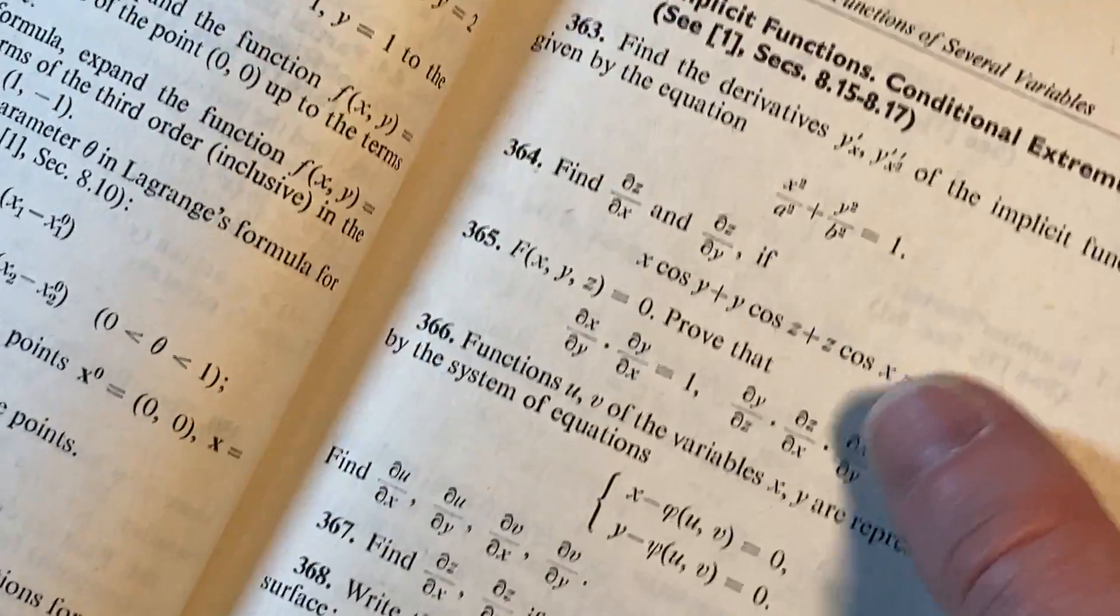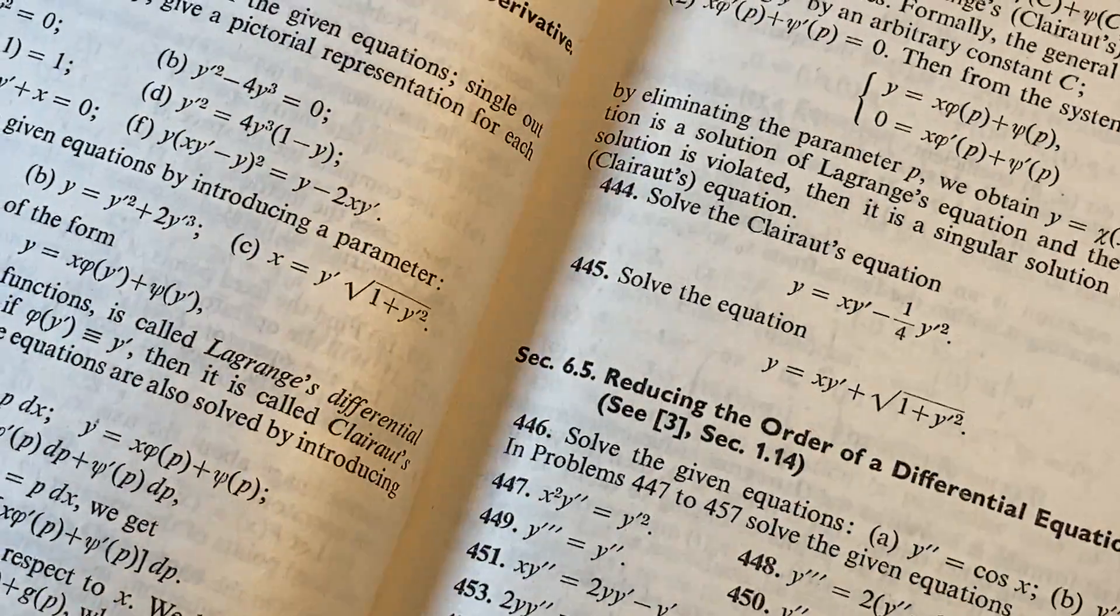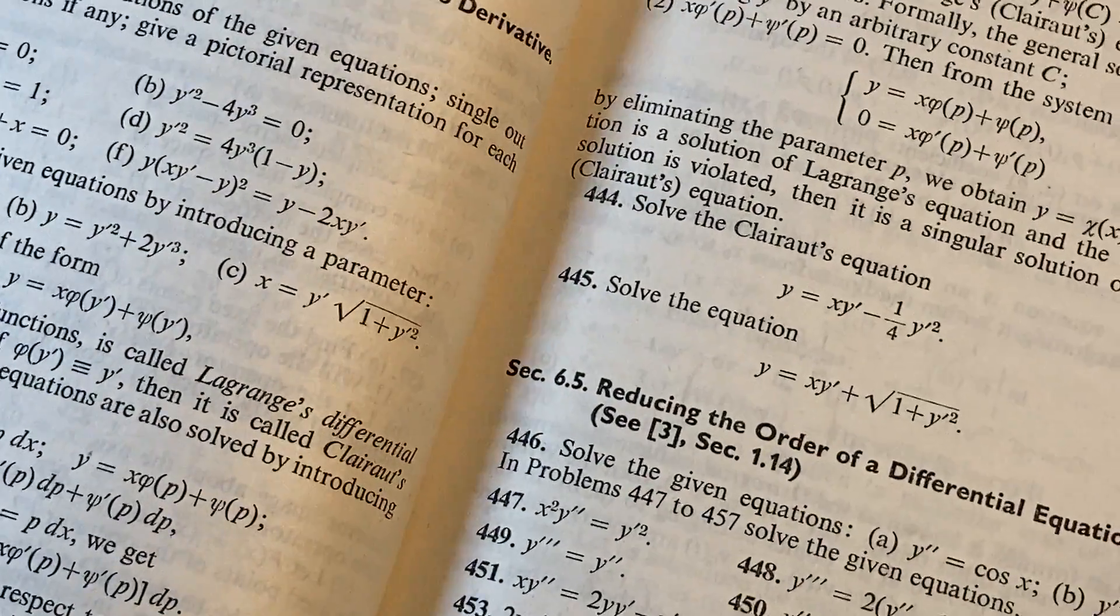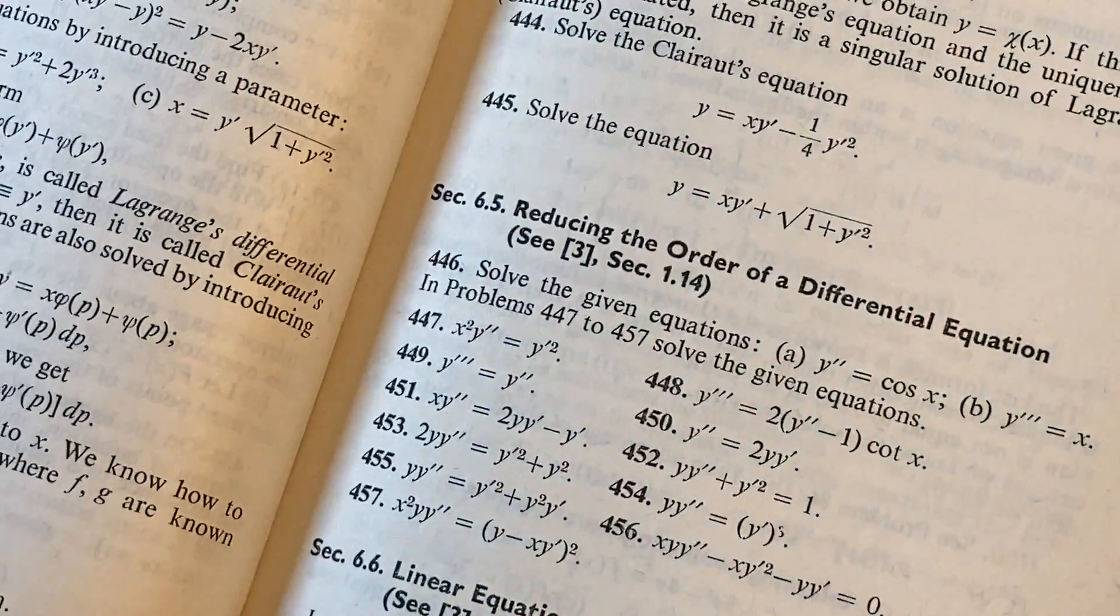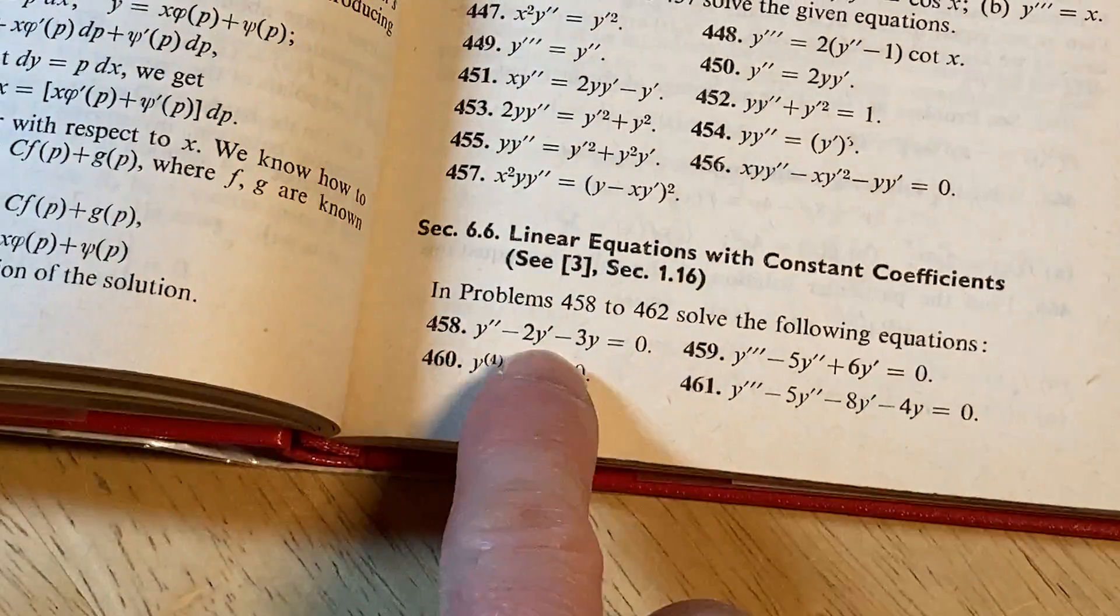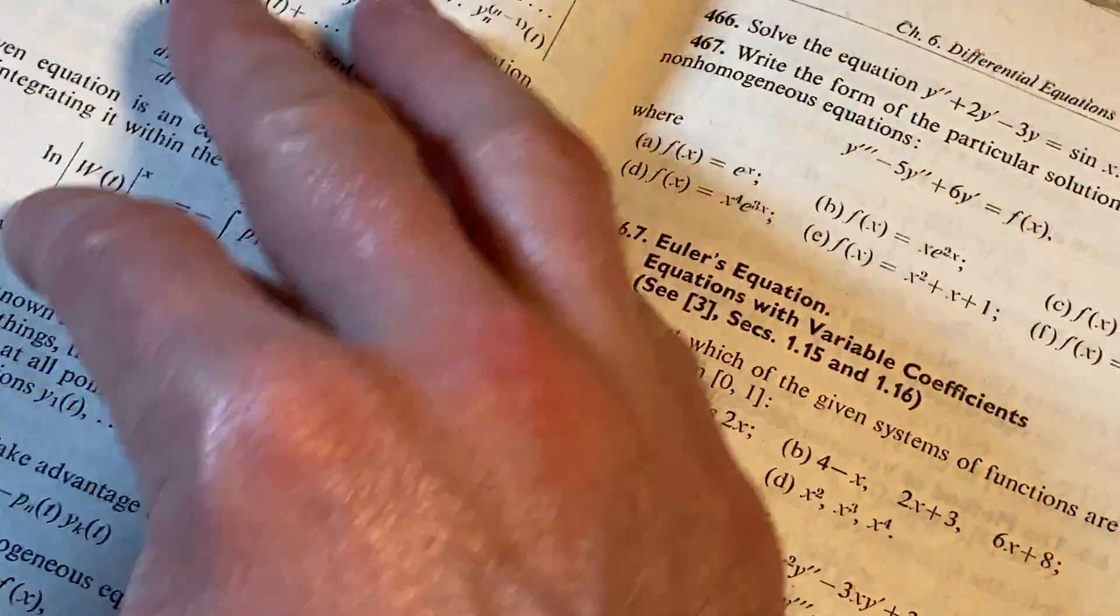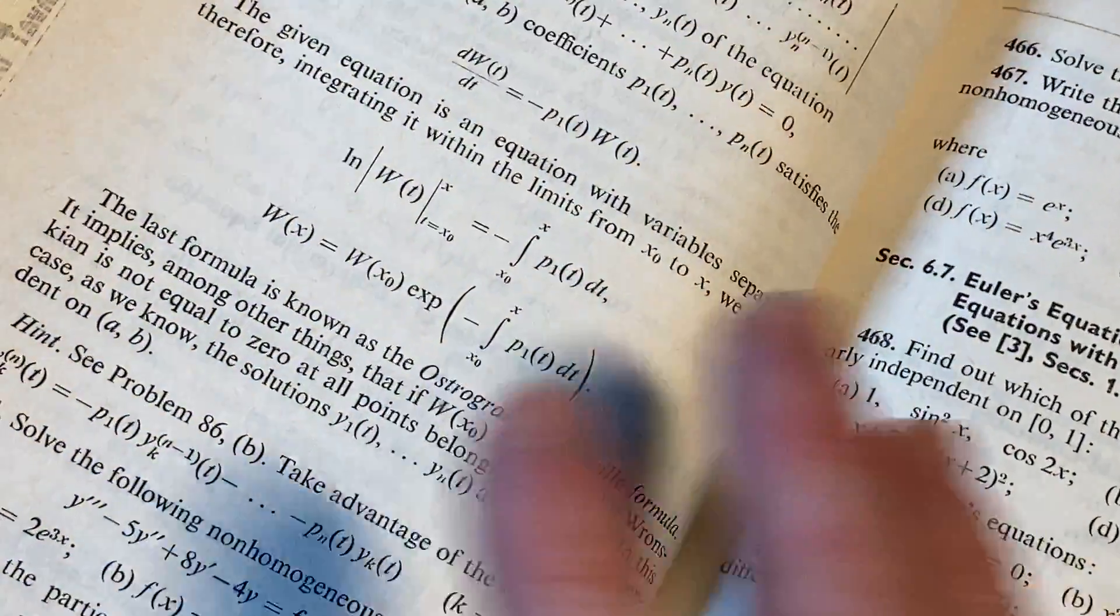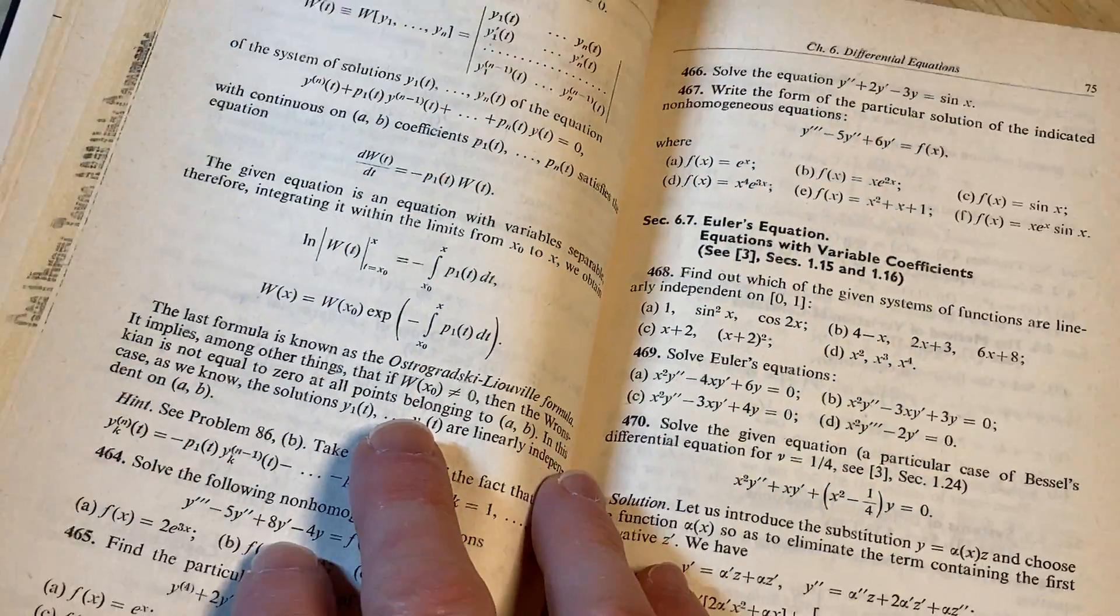Extrema. Implicit functions. Conditional extremum. Differential equations. Reducing the order of a differential equation. Linear equations with constant coefficients. These are really easy. These are really easy problems. Super easy. So it's not like this book is filled with really hard math. You know what I mean? But it has a lot of mathematics. There's a lot here.